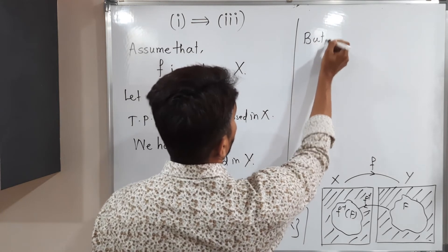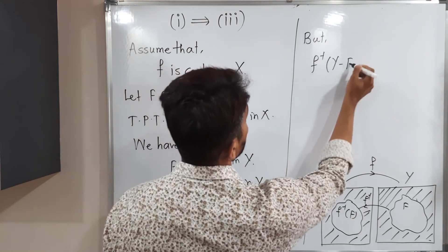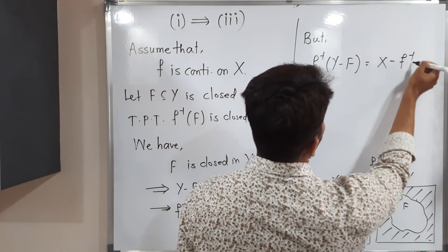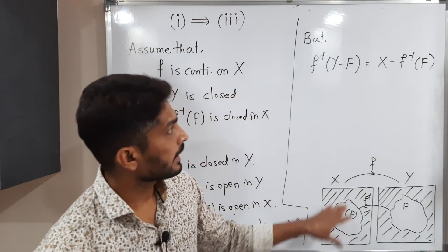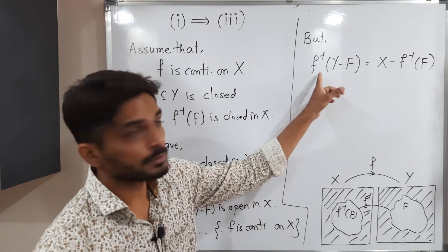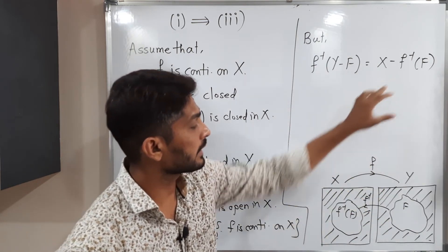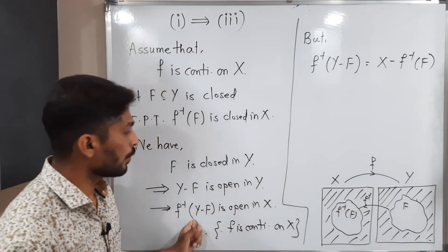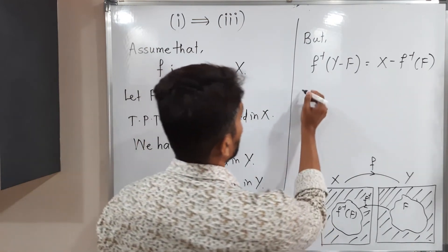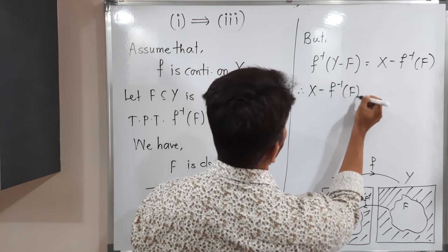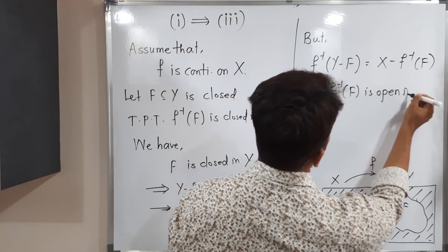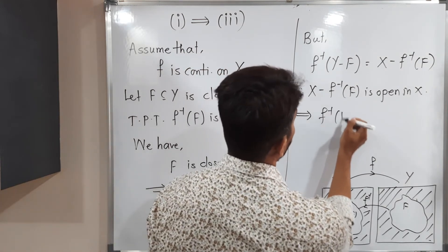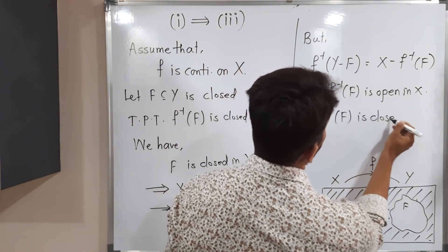But f inverse of (Y minus F) is nothing but X minus f inverse of F — the complement and inverse can be exchanged. So X minus f inverse of F is open in X. Since any set whose complement is open is closed, therefore f inverse of F is closed in X.